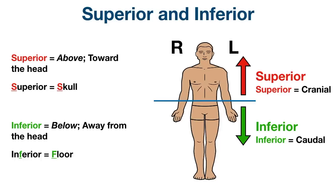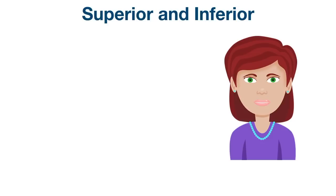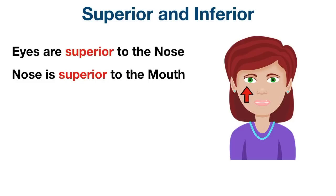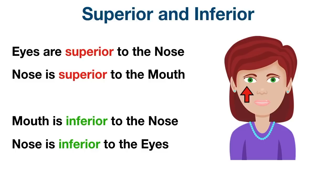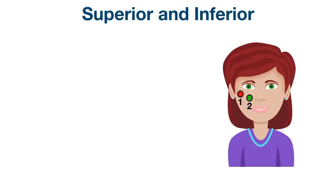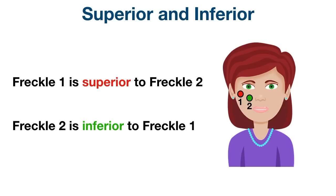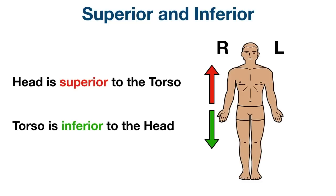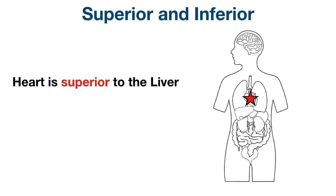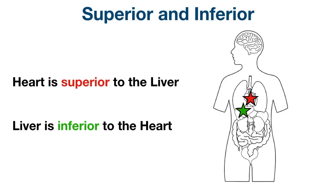Let's look at some examples of superior and inferior. The eyes are superior to the nose and the nose is superior to the mouth. Or we can say the mouth is inferior to the nose and the nose is inferior to the eyes. Freckle 1 is superior and lateral to freckle 2, and freckle 2 is inferior and medial to freckle 1. The head is superior to the torso and the torso is inferior to the head. For internal structures, the heart is superior to the liver and the liver is inferior to the heart. Remember, superior is toward the skull — both start with S — and inferior is toward the floor. Superior can also go by cranial and inferior can also go by caudal.